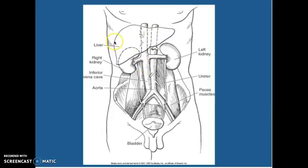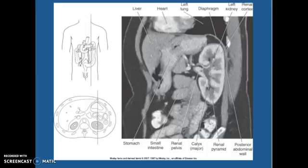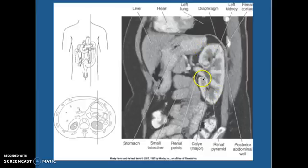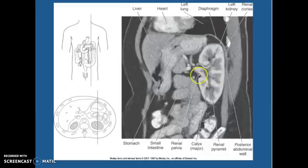Looking at this picture, you can see we have the left kidney and the right kidney, with the ureter coming down into the urinary bladder, and the aorta and inferior vena cava. Looking at a sagittal CT reformatted image, we have the liver anteriorly, the heart, the left lung, and the diaphragm. This is your left kidney, with the renal pyramid, major calyces, and renal pelvis, along with small intestine.